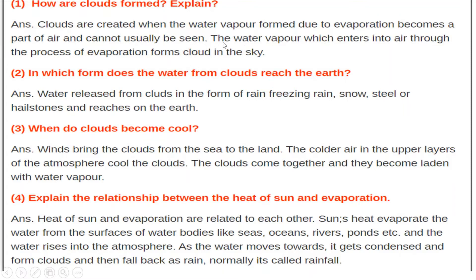After clouds form, they move with the flow of wind to different parts of the earth's surface. After precipitation, when the clouds are heavy and can no longer hold the water droplets, it will rain.